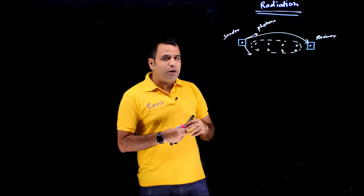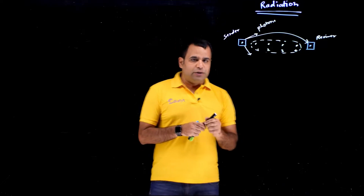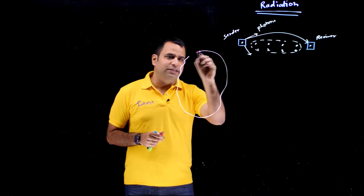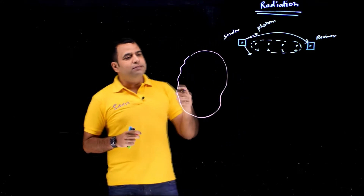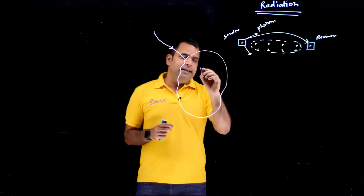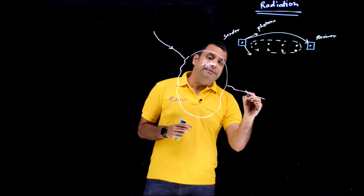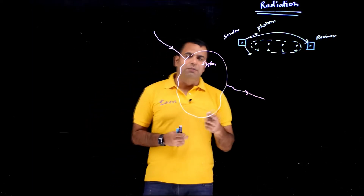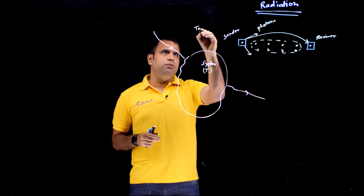To study this process, there are four basic things which happen. Consider a random system receiving energy through radiation and also emitting energy out. Let's assume the temperature of this system is T and the outside temperature is T-naught. The energy incident upon the system is coming from the surrounding.